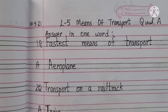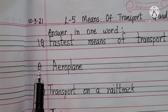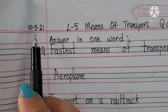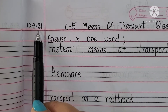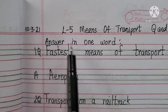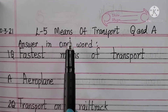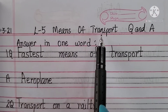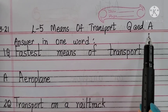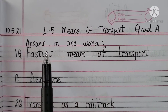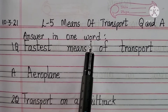Children, are you all ready with your EVS notebook? Let's start the class. First we will write today's date, and it is 10th March 2021. Your heading will be Lesson 5: Means of Transport. And what are we writing today? Question and answers. Your sub-heading will be: Answer in one word.